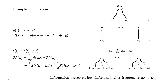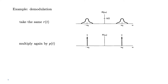Since the information has been preserved, it is interesting to wonder how to recover it from the signal R of j omega. Information can be recovered through a process called demodulation — what we saw before was an example of modulation. In the case of demodulation, we take the same r of t and simply multiply again by p of t, the same cosine signal we used before. The Fourier transform of p of t is again two Dirac deltas centered at omega 0 and minus omega 0.